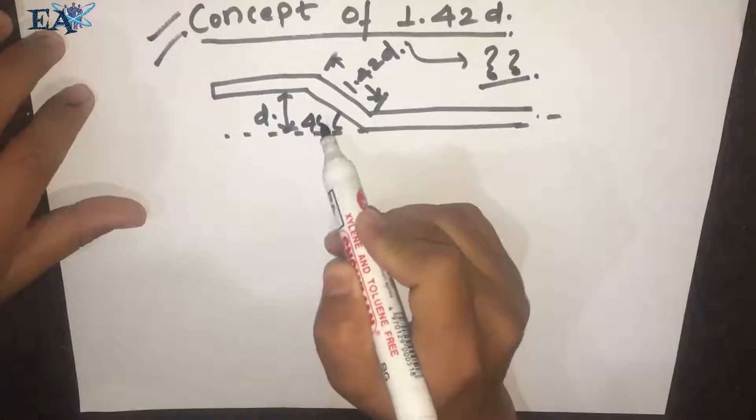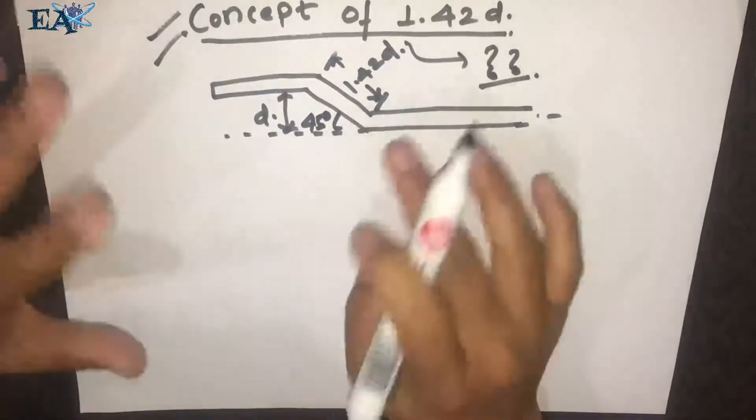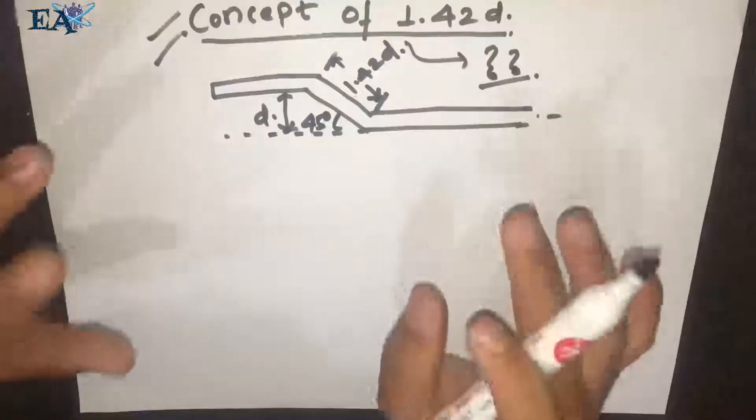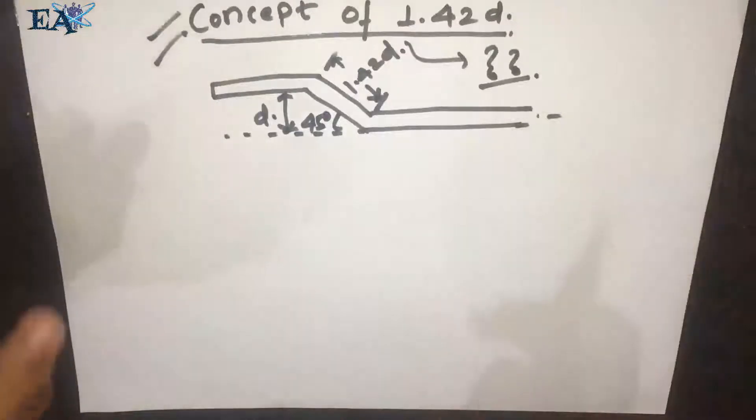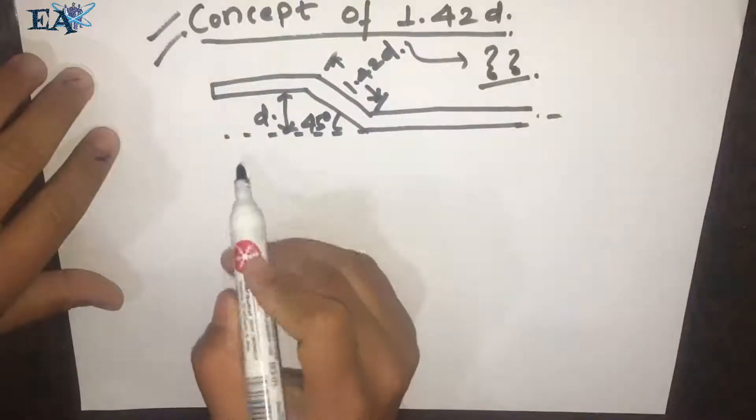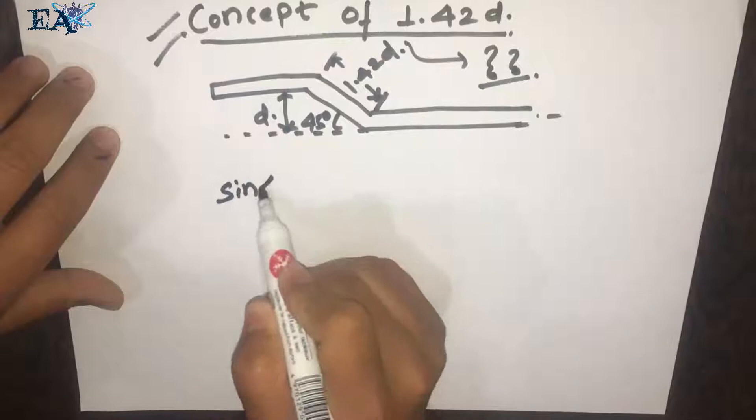We know that the bars are bent up at 45 degrees—sometimes they might be at 30 degrees, but normally they're bent at 45 degrees. So let us take sine of 45 degrees.